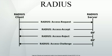Because of the broad support and the ubiquitous nature of the RADIUS protocol, it is often used by ISPs and enterprises to manage access to the Internet or internal networks, wireless networks, and integrated email services. These networks may incorporate modems, DSL, access points, VPNs, network ports, web servers, etc.